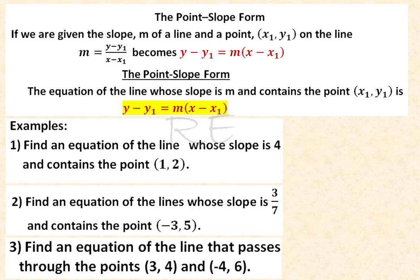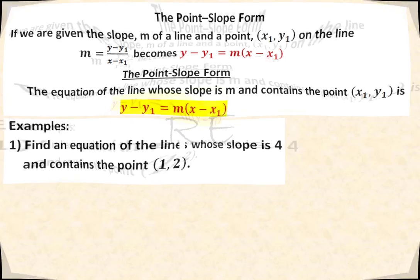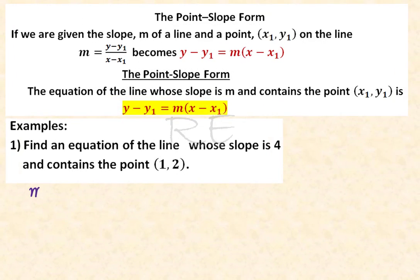If we are given the slope m of a line and a point x₁, y₁ on the line, m is equal to y minus y₁ divided by x minus x₁. When we cross multiply, we get y minus y₁ is equal to m times x minus x₁. This is known as the point-slope formula that allows us to get an equation of that line.